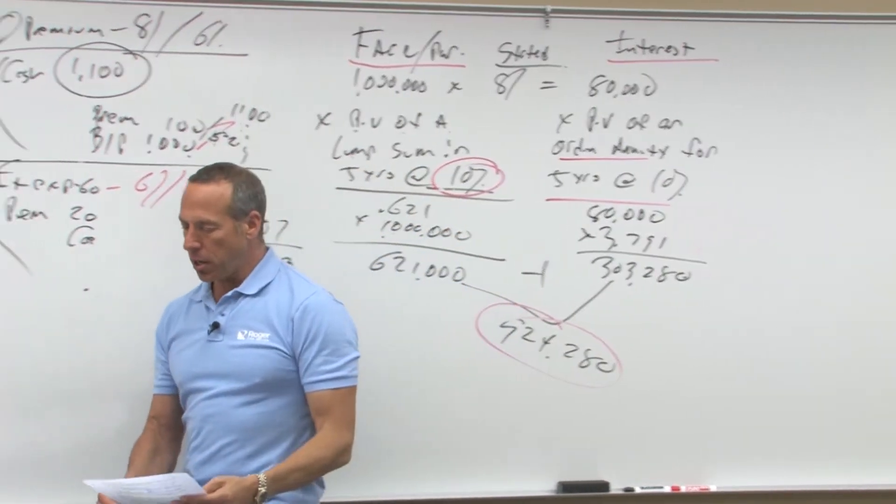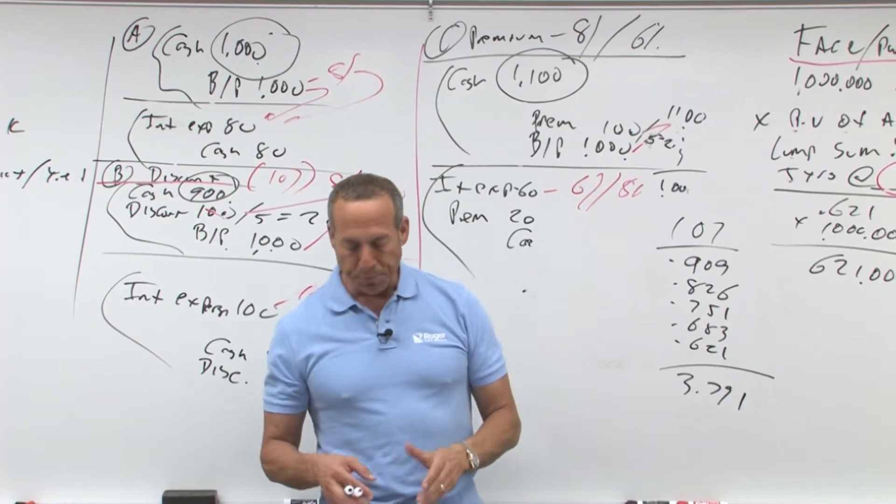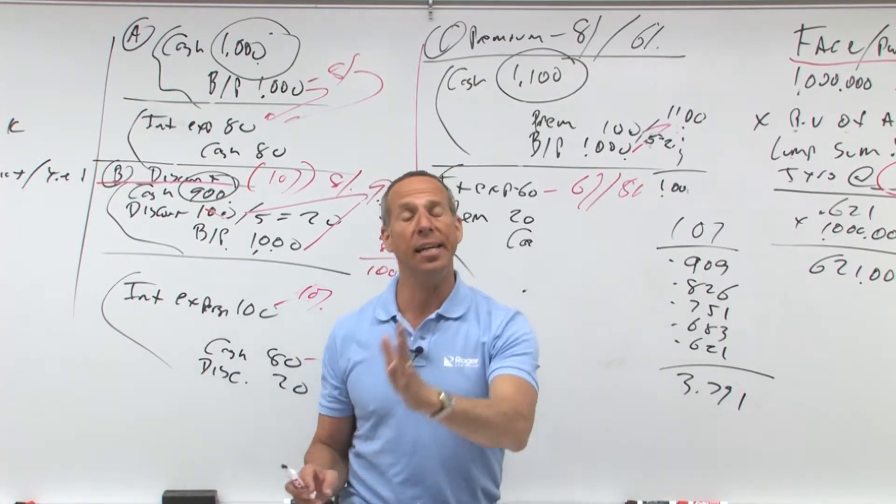Now, what is the other type listed here? Present value of an annuity due. The annuity due is what? That means you're going to get the money at the beginning of the year.